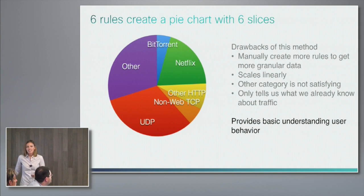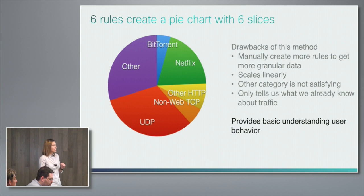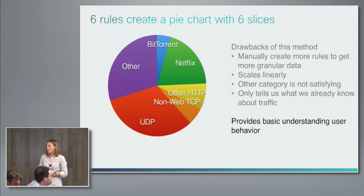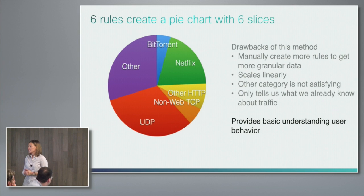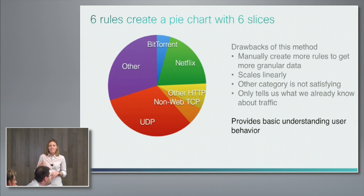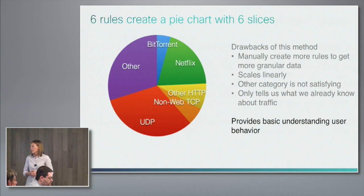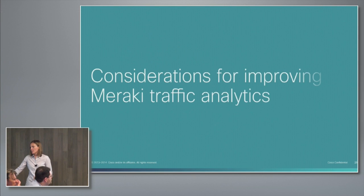In that initial example, if we had a use case with just six rules we'd create a pie chart with six rules. You'll notice some things that are lacking in this type of analysis — for instance, we have this 'other' section that's not really giving us any useful information. It's unsatisfying, it scales linearly, and it's telling us what we already know about our traffic. It's not going to learn about any new changes in the network, so we wanted to rethink the way we built this engine.